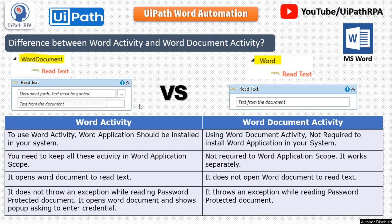The fourth difference: Word Activity does not throw an exception while reading a password-protected document — it opens the Word document and shows a pop-up asking you to enter the credentials. But when you use Word Document Activity, it will throw an exception while reading a password-protected document.